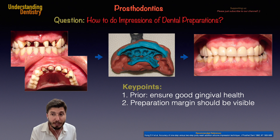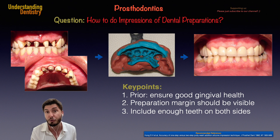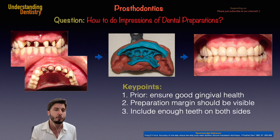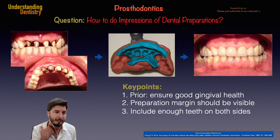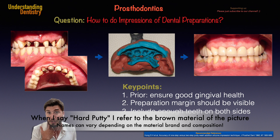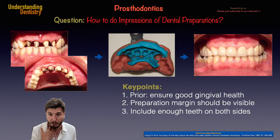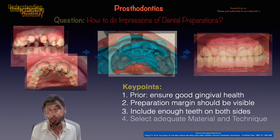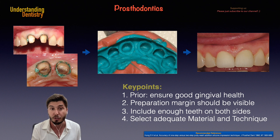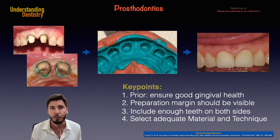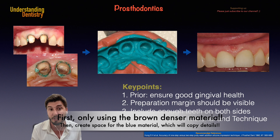The third key point is also very important: include enough teeth on both sides. Even if you use a partial tray, don't include only a few teeth — you should use at least the hard putty to include more teeth, as you can see in the picture. You can also use a two-stage approach, and in this case you can also use the retraction cord, but you do it in two different stages.